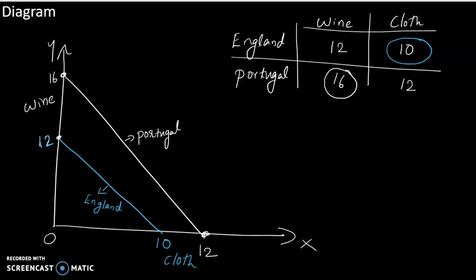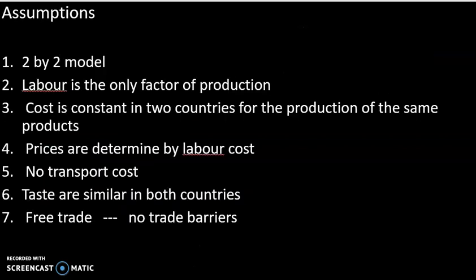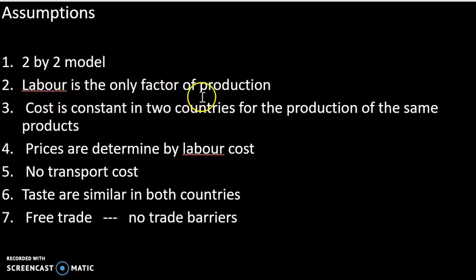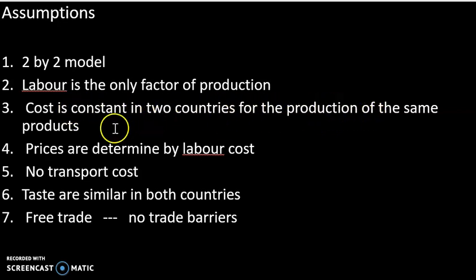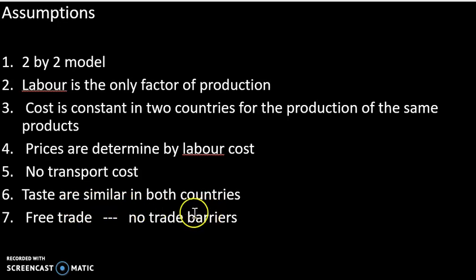Now I will take a few assumptions. This is a 2x2 model — two countries produce two commodities. Labor is one factor of production. Cost is constant in two countries. The labor cost is the same. There is no transportation cost. Free trade — no trade barriers. These are the assumptions.